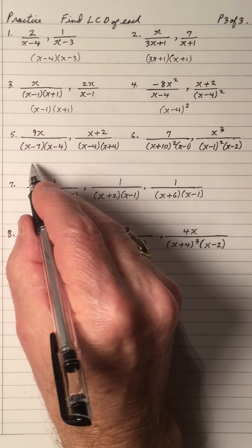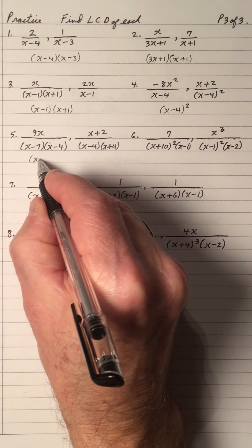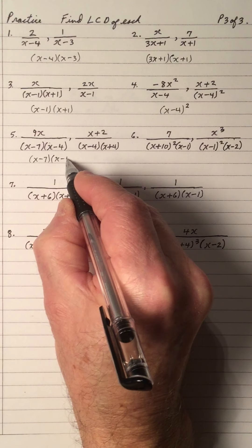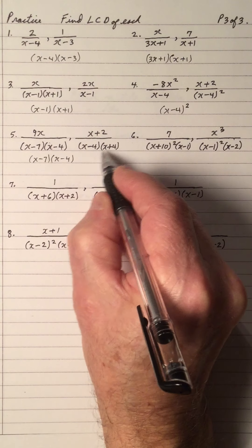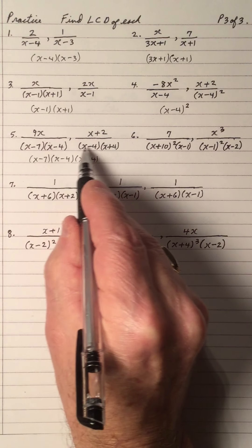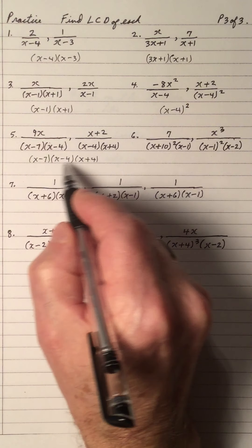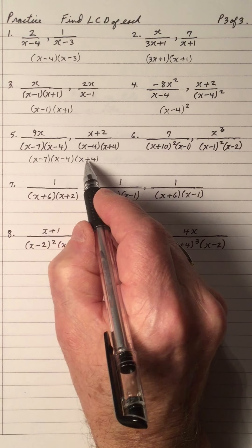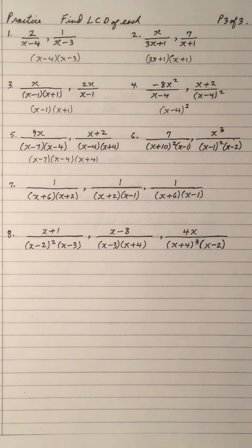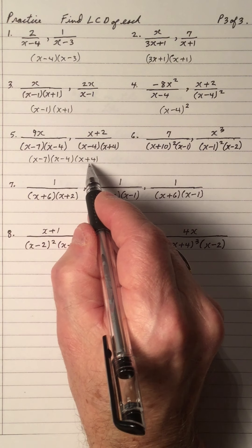Practice number 5: looking through, I need a factor of (x minus 7), a factor of (x minus 4), and a factor of (x plus 4). These are three different factors, one of each, and the highest exponent is 1. So the LCD for number 5 is (x minus 7) times (x minus 4) times (x plus 4).